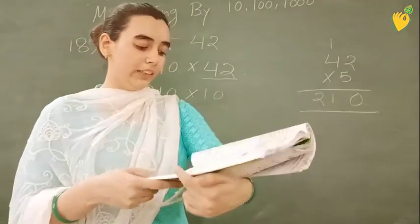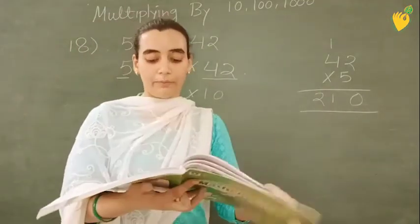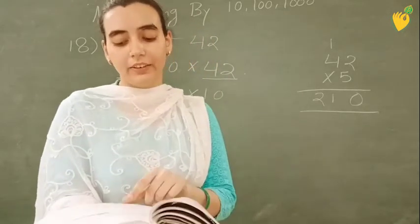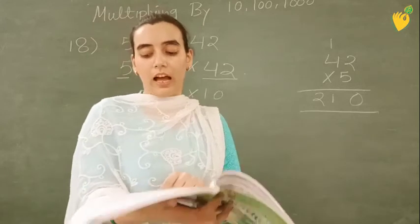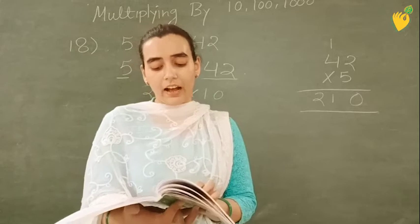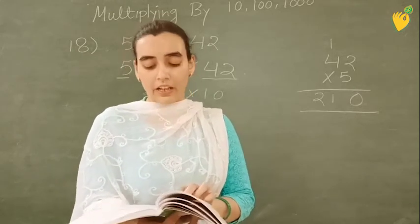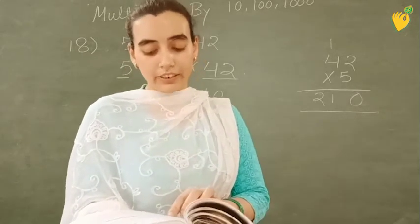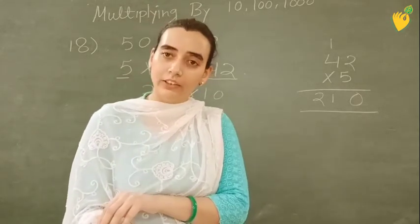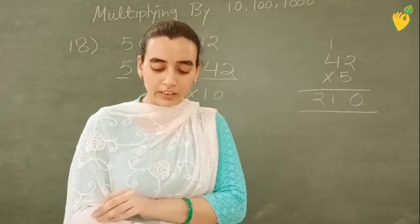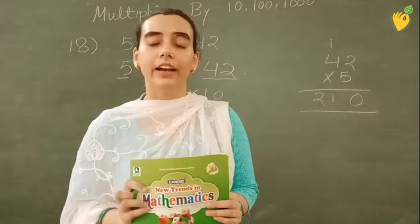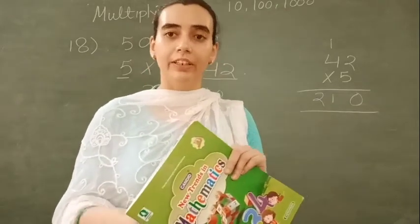Now you will do question number 19 and 20 itself. I am explaining this question. Sunita has 92 10 rupee notes. How much money does she have? It is just like question number 17. And question number 20 is a man has 36 50 rupees notes. How much money does he have? It is also like question number 17. Now you will complete this exercise. That is exercise 5.7. Thank you class.